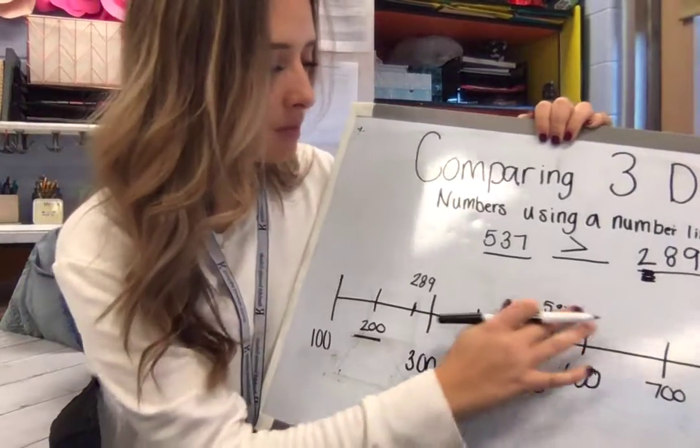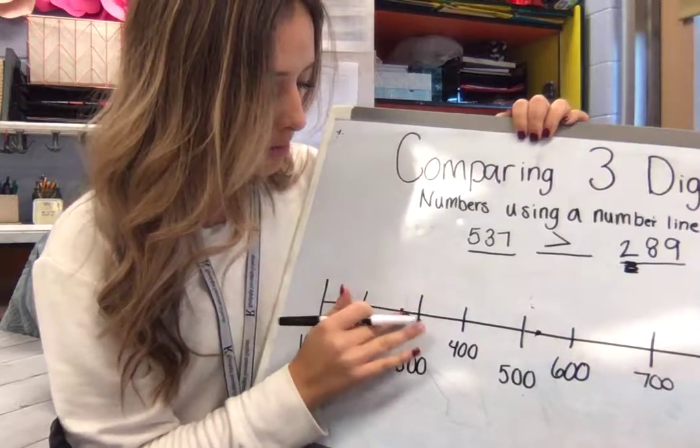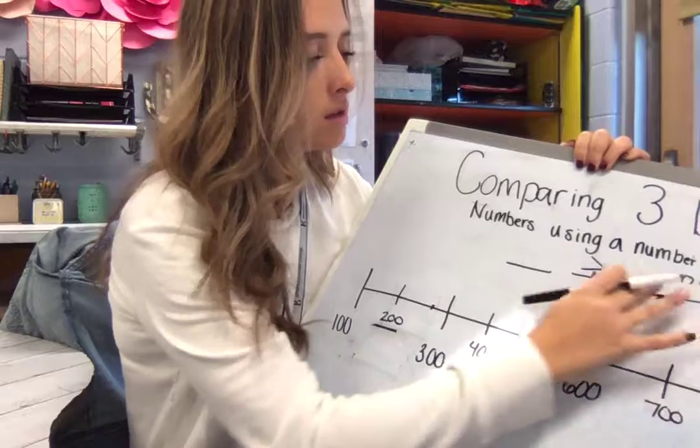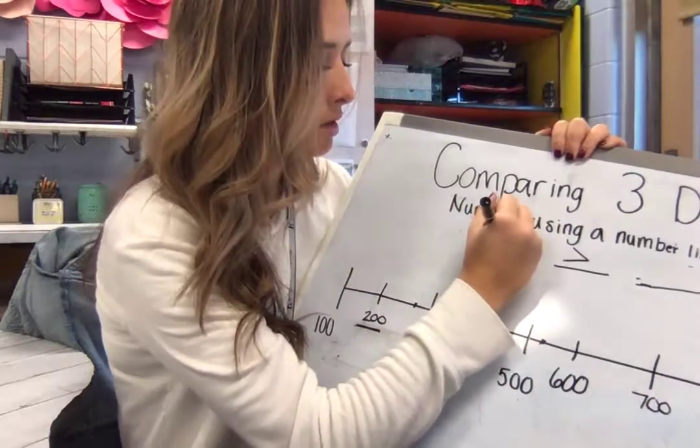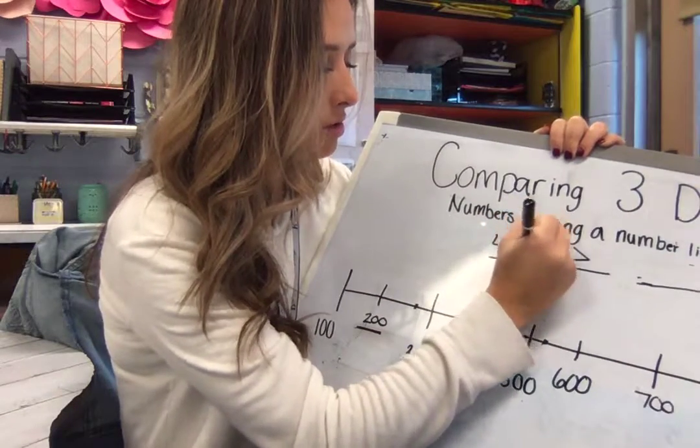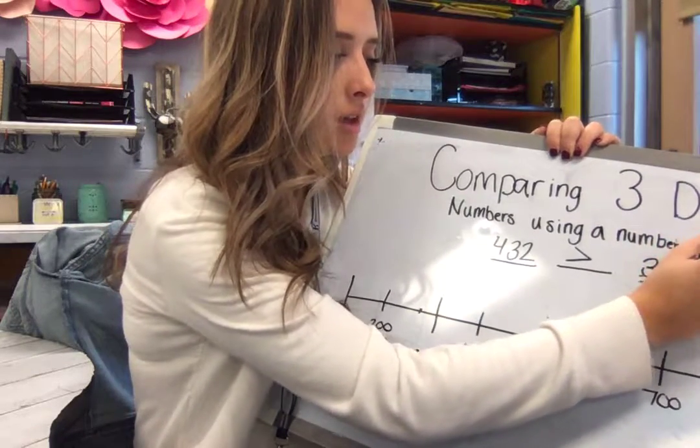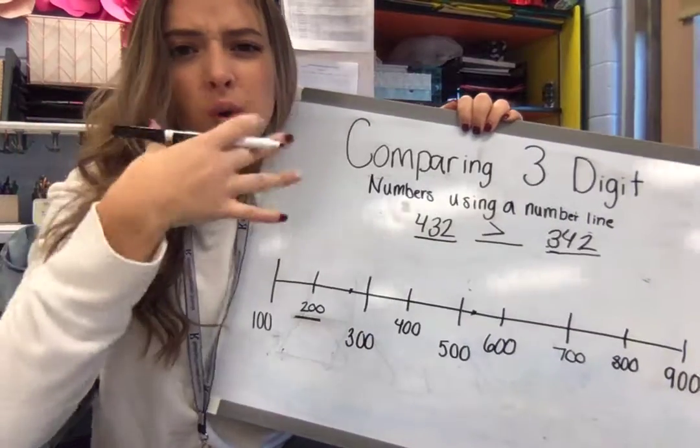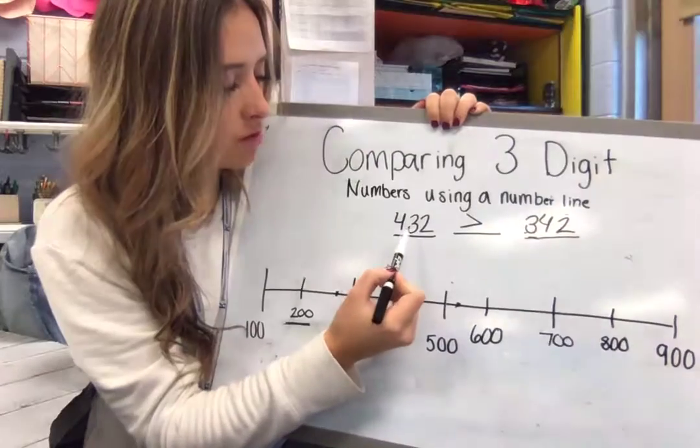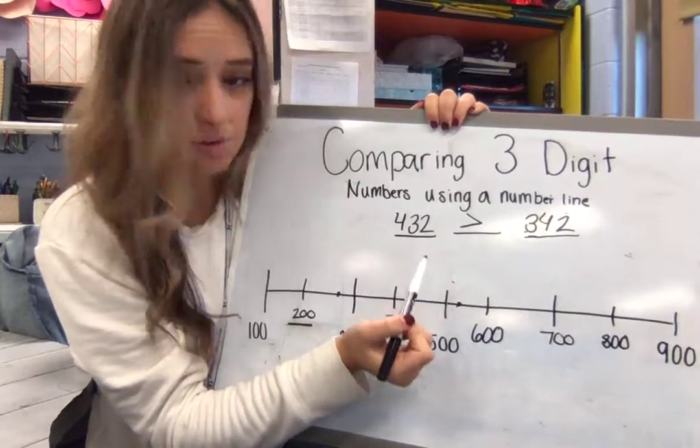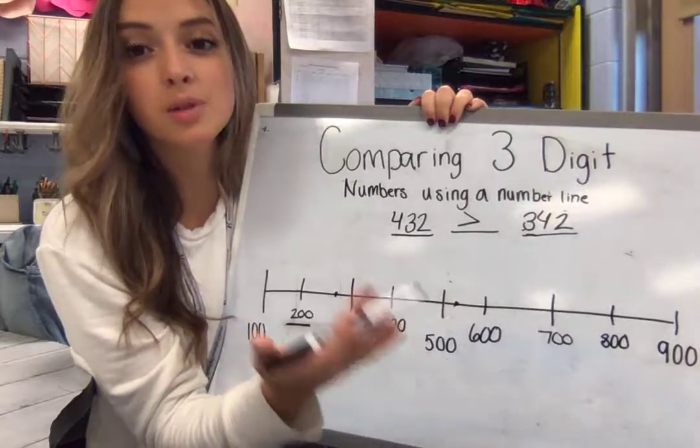Want to try another? Let's erase this. Try a little bit more of a tricky one. See if I can get you. Okay. Let's do 432 and 342. First, you want to think to yourself, what is similar about these numbers? They have all of the same digits, right? I have a 3, a 4, a 3, a 4, and a 2. And I have a 3, a 4, and a 2. But they're not the same number. And that's because of place value.